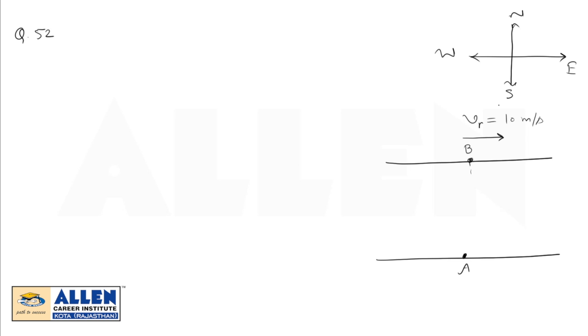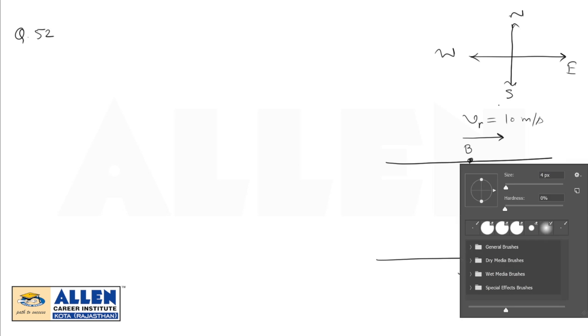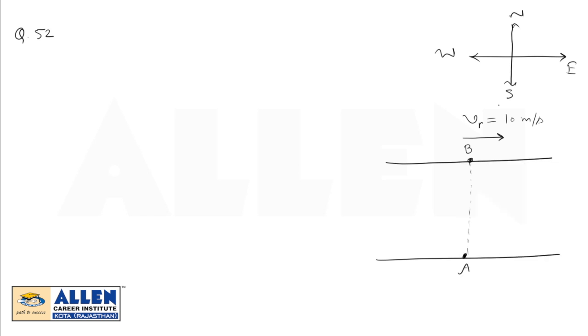So for the shortest path, if the person is at A then he has to reach exactly the opposite point B. This is the shortest path and following this shortest path, the person has to reach B. As we know, if the person wants to reach this particular point B and the river is flowing in forward direction, then this one is downstream DS and this is upstream. So the person should start to swim along this direction like this.